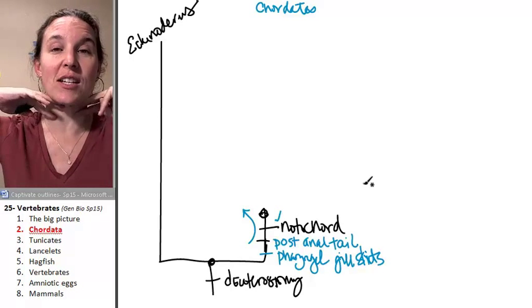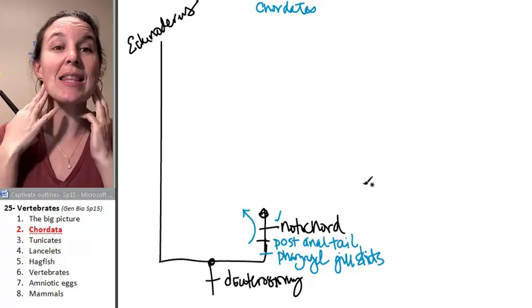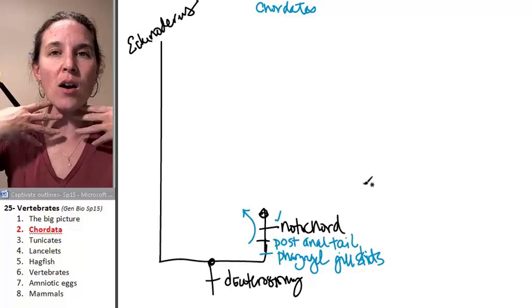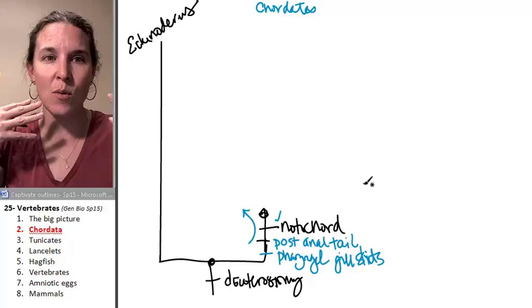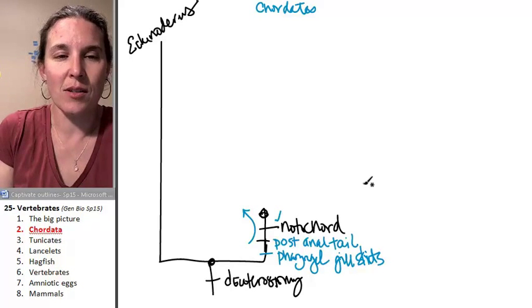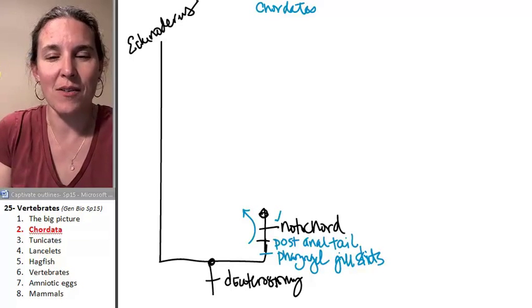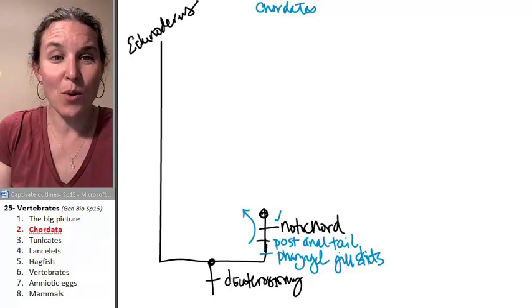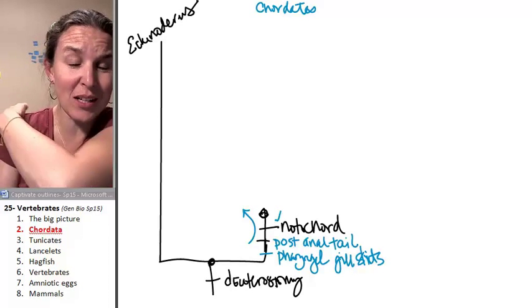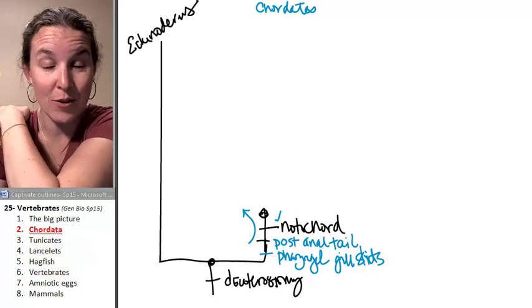Pharyngeal gill slits are these structures in the pharynx, which is basically the throat area, that are places where back in the day we let water go in and out. And we have those in utero before we come out. So we get to call ourselves chordates because we have all those things, even though we really don't have any of them anymore after we grow up.